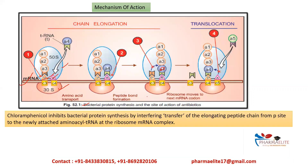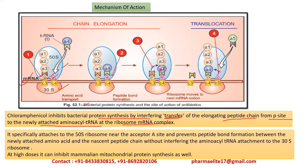The mechanism of action of chloramphenicol is that it inhibits protein synthesis by interfering with the transfer of the elongating peptide chain from the P site to the newly attached aminoacyl-tRNA at the ribosome-mRNA complex. It specifically binds to the 50S ribosome near the acceptor A site and prevents peptide bond formation between the newly attached amino acid and the nascent peptide chain, without interfering with aminoacyl-tRNA attachment to the 30S ribosome.